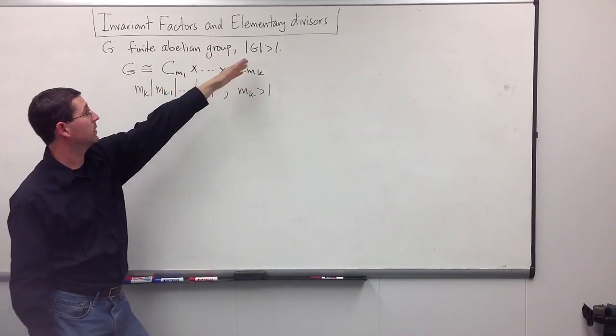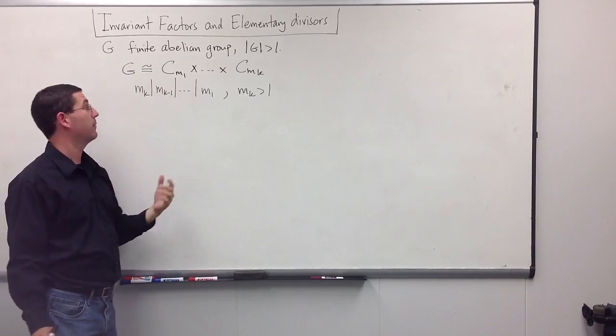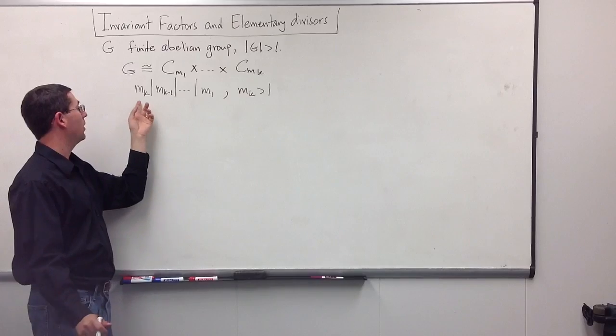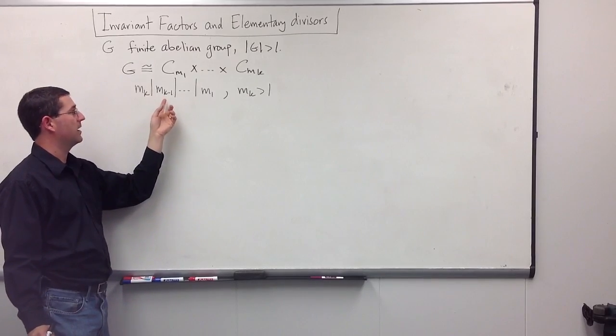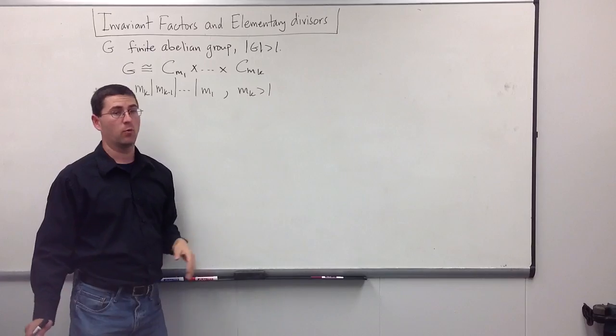Remember for a finite abelian group, at least one which is positive, we know that we can decompose our group as a direct product of cyclic groups of orders M1 through Mk, where Mk divides Mk minus 1 and so forth, and everything divides M1, and we can assume that Mk is greater than 1.